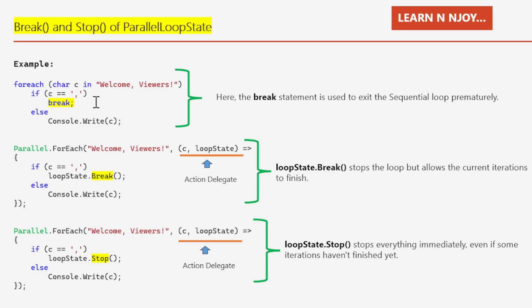For that, we are going to utilize ParallelLoopState Break and StopMethod. In the first Parallel.ForEach, I have written 'welcome, viewers, c, loopState' — this combination is the action delegate, where c is the character and loopState represents the ParallelLoopState instance. Inside, if c equals comma, I call loopState.Break(). This stops the loop but allows the current iteration to finish. In the second Parallel.ForEach, I use loopState.Stop(), which stops everything immediately even if some iterations haven't finished yet.